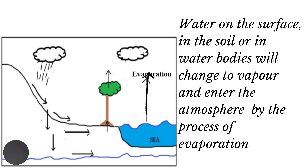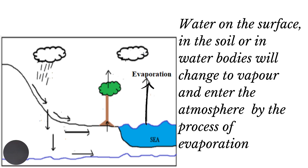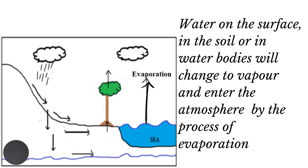Water on the surface, in the soils, or in water bodies such as rivers, lakes, or ponds may be converted to water vapor and enter the atmosphere. This process is called evaporation.